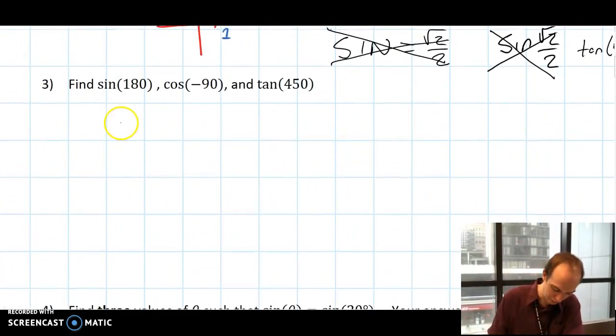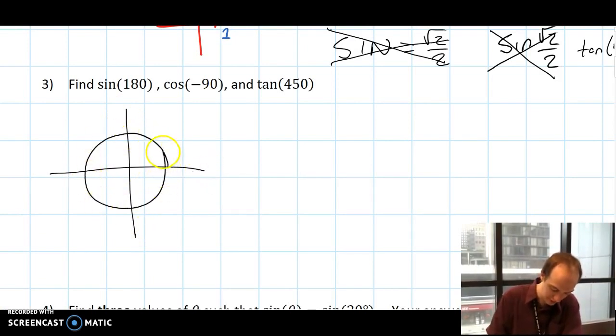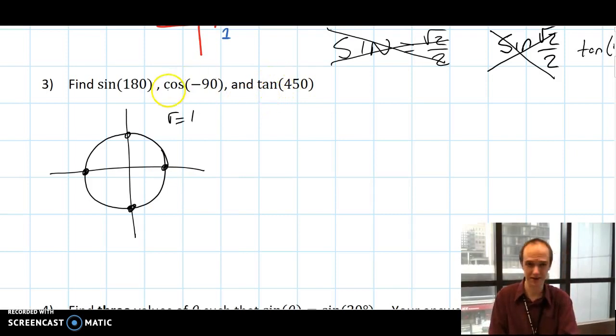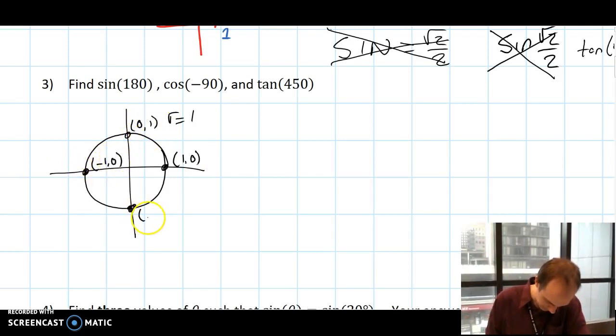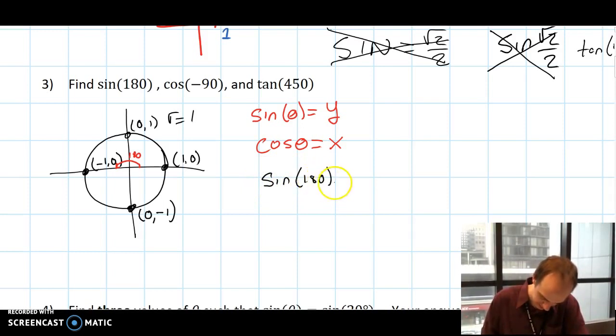Find sine of 180, cosine of negative 90, and tangent of 450. I'm going to start by drawing a unit circle with radius of 1, and I'm going to put the 4 points on here. This is 1, 0. This point is 0, 1. This point is negative 1, 0. And this point is 0, negative 1. 180° is like this. Sine of theta equals y, cosine of theta equals x. So sine of 180 must equal 0. Cosine of negative 90, that's right here, and I'm looking for the x-coordinate, so that's also going to equal 0.